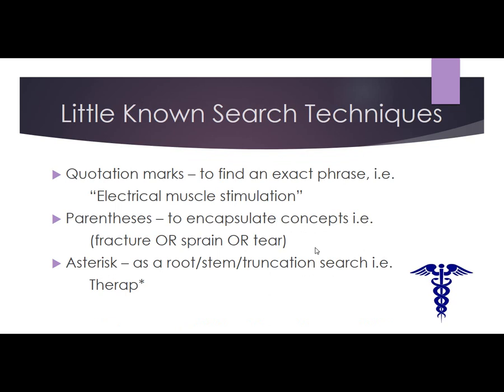Here are a few more techniques, including using quotation marks, parentheses, and an asterisk. When looking for an exact phrase, for instance a title or a multi-word name, you can put it in quotation marks so that the database will only return exact matches. For example, if you are looking for 'electrical muscle stimulation' as a phrase, using quotation marks will force the database to only return complete matches.